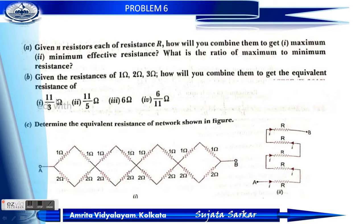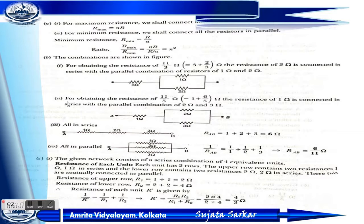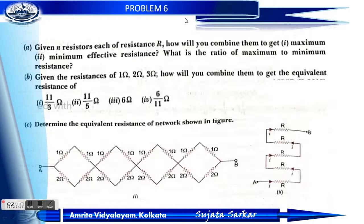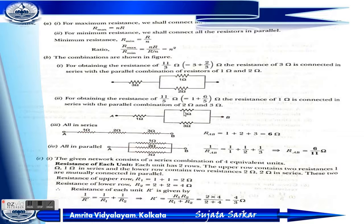For 11/3 ohm: connect 1 ohm and 2 ohm in parallel, then connect 3 ohm in series — giving 11/3 ohm. For 11/5 ohm: connect 2 ohm and 3 ohm in parallel, then connect 1 ohm in series — giving 11/5 ohm.